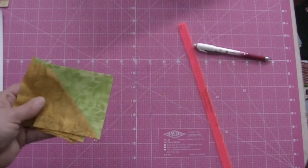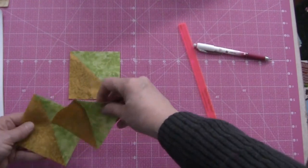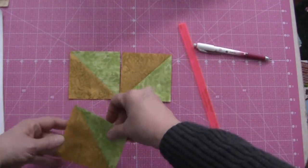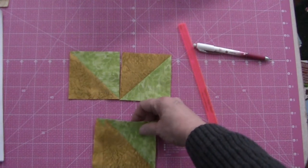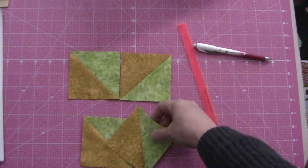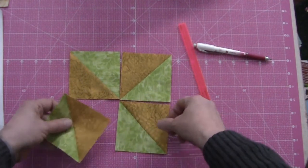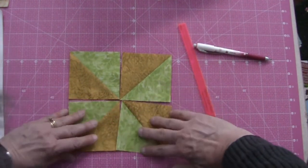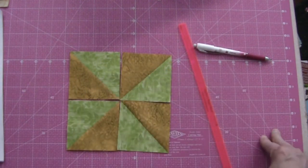Okay, the first step in assembly is to make the inner pinwheel. So you want to arrange these half-square triangles from Step 2, the Fabric BE, and you want to arrange them in the pinwheel fashion. And then we'll just sew them together in pairs and then sew the two pairs together in rows.